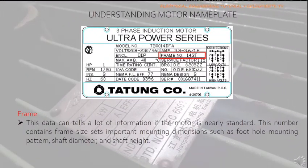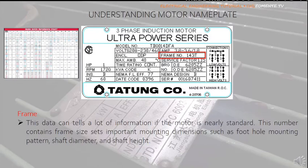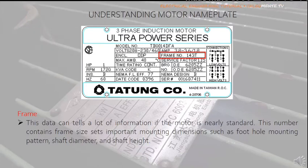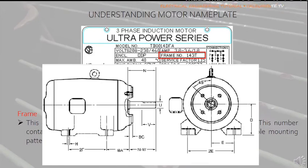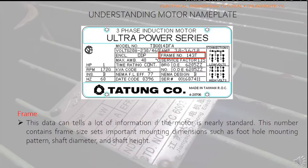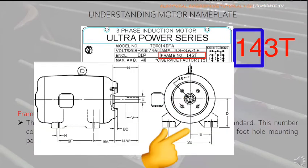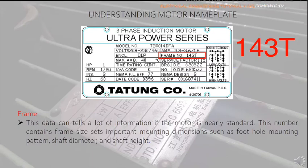Frame: This data tells you a lot of information if the motor is nearly standard. It is given by the NEMA frame designation, which includes frame dimensions such as foot hole mounting pattern, shaft diameter, and shaft height from foot to the center of the motor shaft. In this example, this 1 HP motor has frame number 143T. The first two digits, 14, divided by 4 equals 3.5 inches — the distance from the center of the shaft to the center bottom of the mount. The letter T means the motor is of the 1964 or later T-frame vintage.